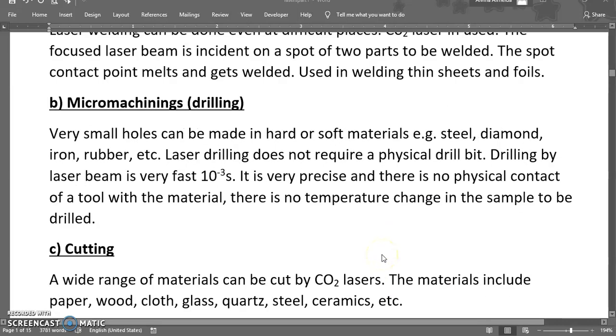Micromachining, that is called drilling. Very small holes can be made in hard or soft materials, for example steel, diamonds, iron, rubber, etc. Laser drilling does not require a physical drill bit. Drilling by laser is very fast, about 10^-3 seconds. It is very precise and there is no physical contact of the tool with the material. Hence there is no temperature change in the sample to be drilled. As a result, there is no change in the structure of the material.